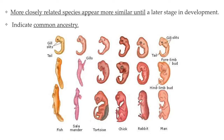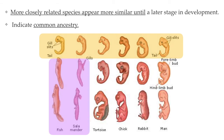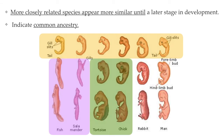A comparison of embryos of different species also shows us that the more closely related species are, the more similar their embryos will look. In this diagram, you can see that although all of these embryos look very similar at the earlier stages of development, as they each develop further they start to look more and more different from each other. However, fish and amphibian embryos, reptile and bird embryos, and mammal embryos continue to look very similar into later stages of embryonic development — evidence of common ancestry.